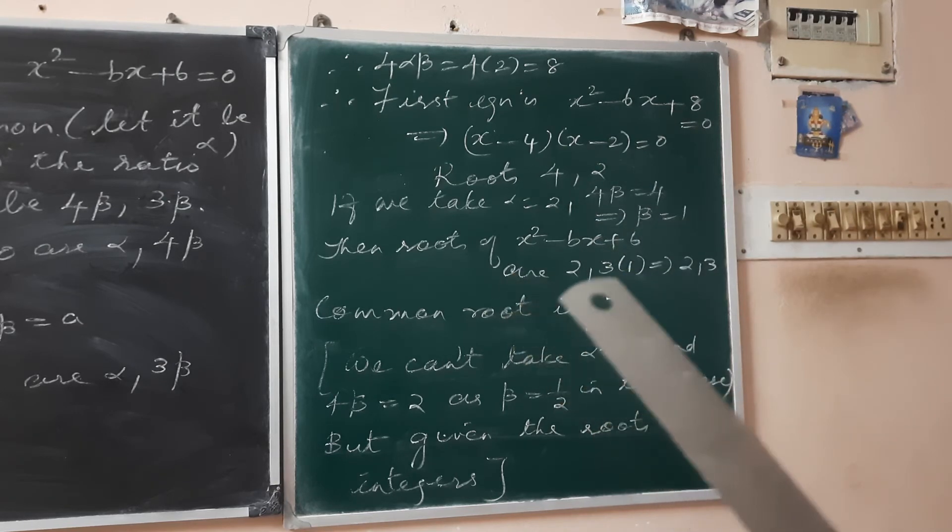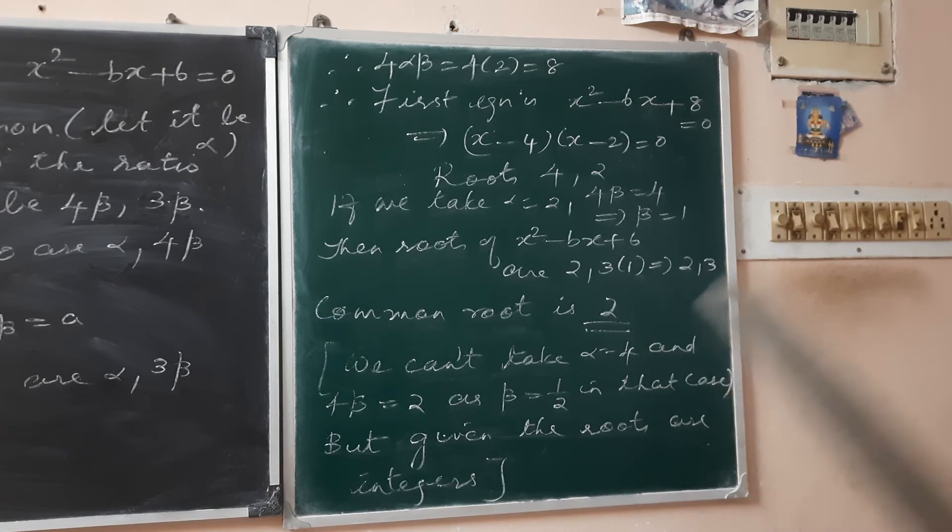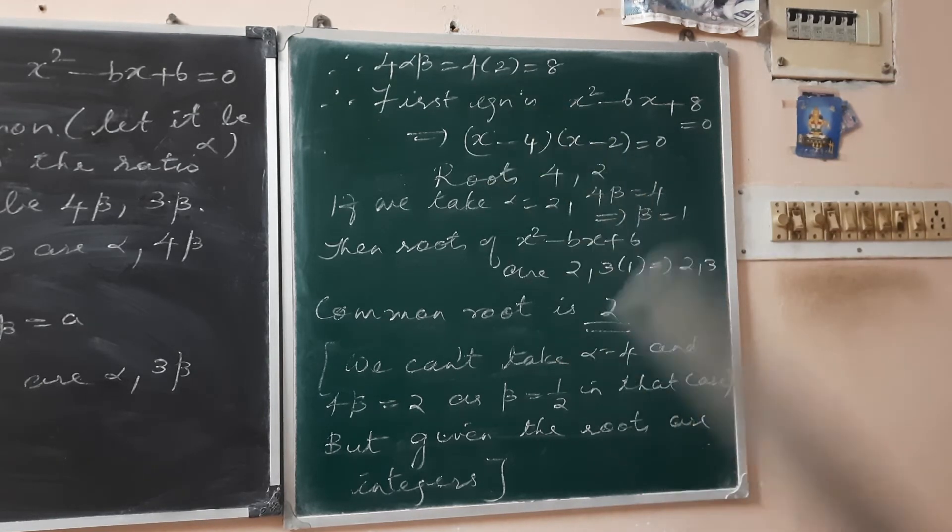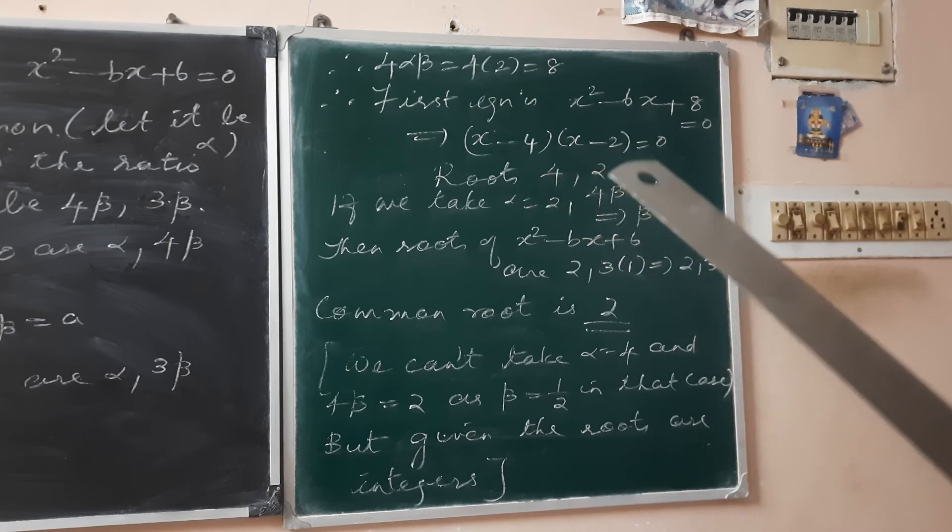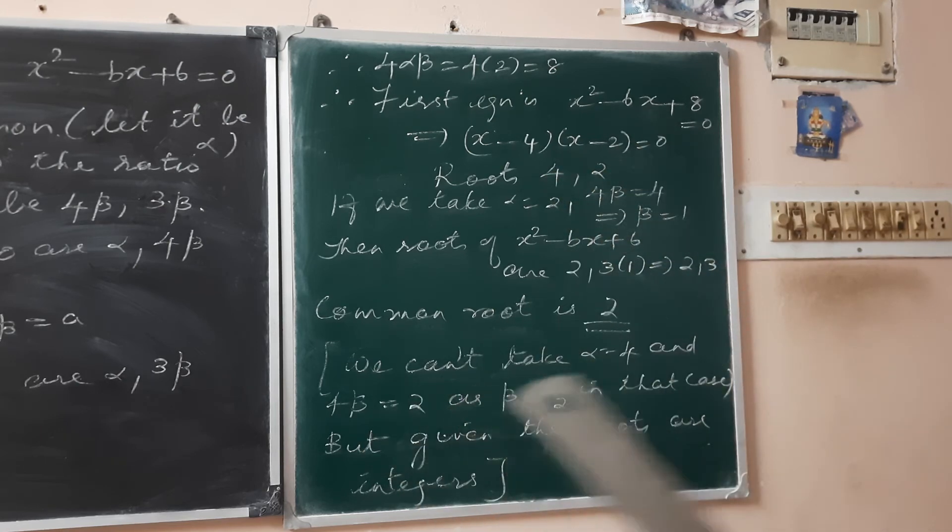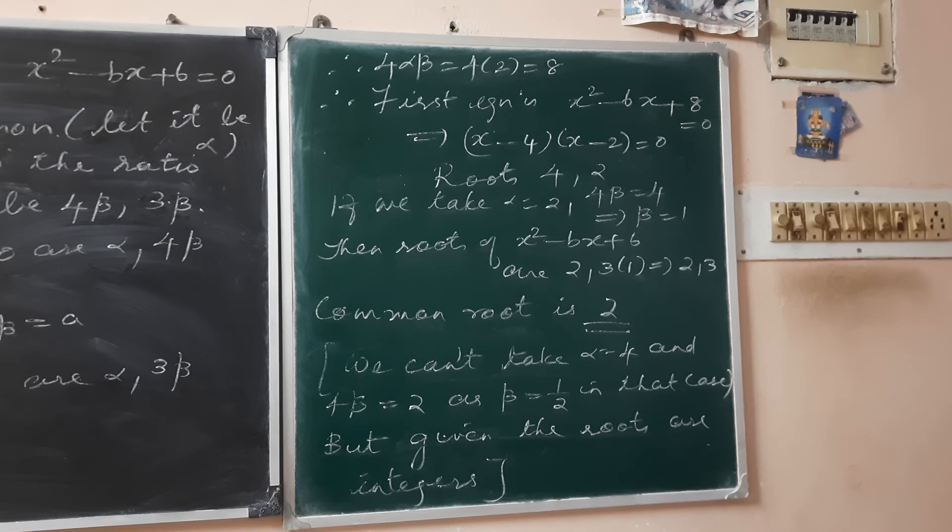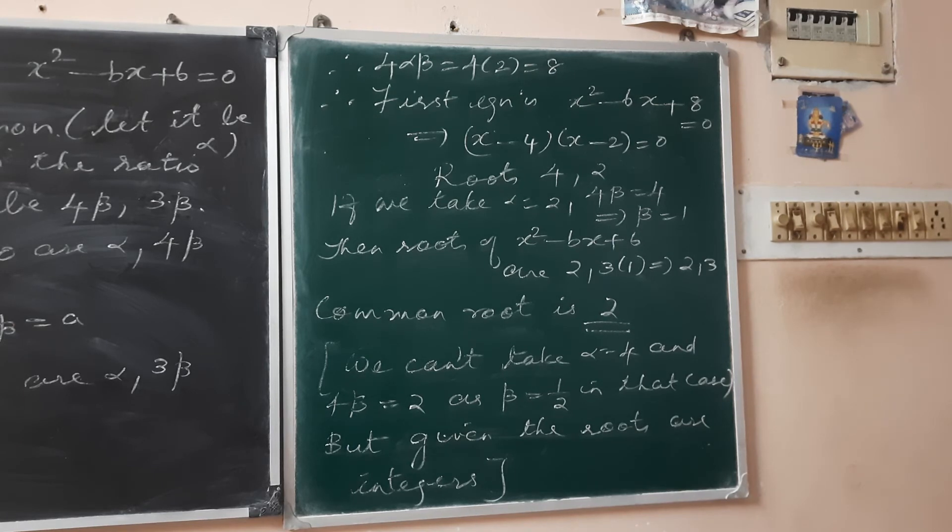The roots are... if the common root is 2, this is one possibility. Now, if α is 4 and β is 0.5, these are not integer values, but the roots should be integer roots.